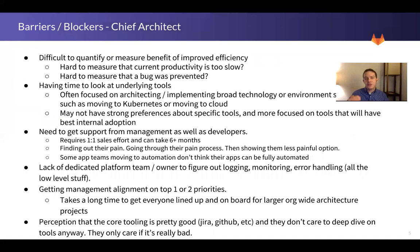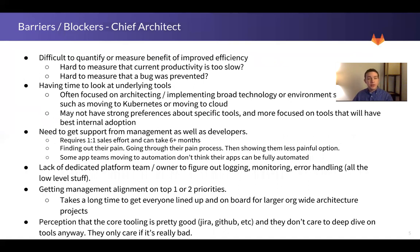What are the barriers or blockers to chief architects adopting new technology? First, it can be difficult to quantify or measure the benefit of improved efficiency. If you don't have instrumentation in place now to measure productivity, if you don't have a number for what productivity looks like today, how will you know what it looks like after a change? Not having measured the current state to demonstrate improved efficiency can be a blocker from even justifying adopting something new.